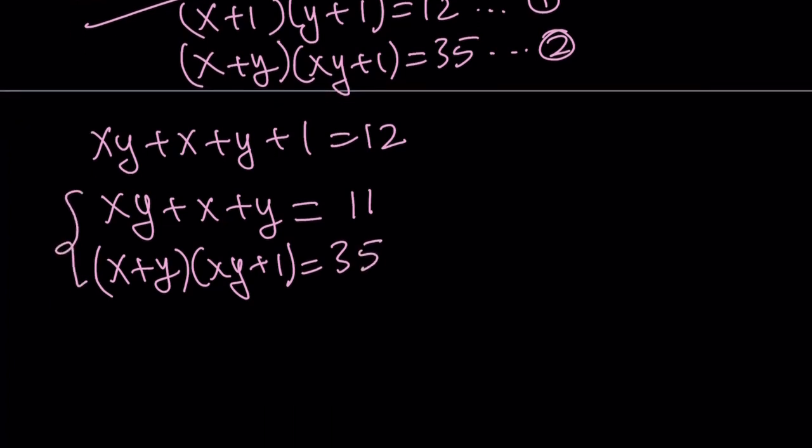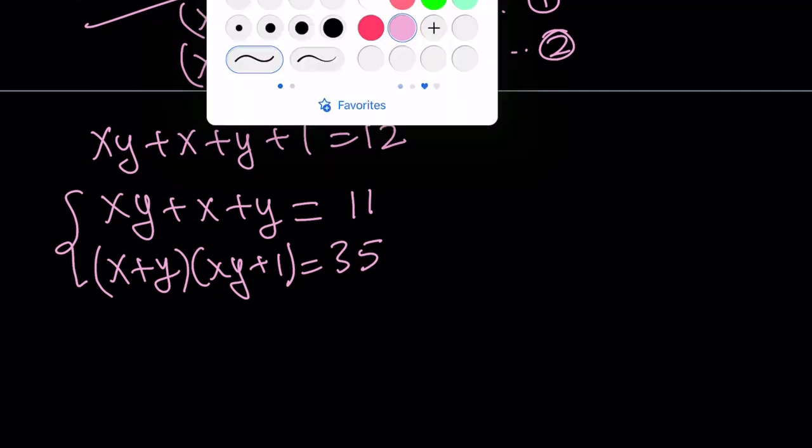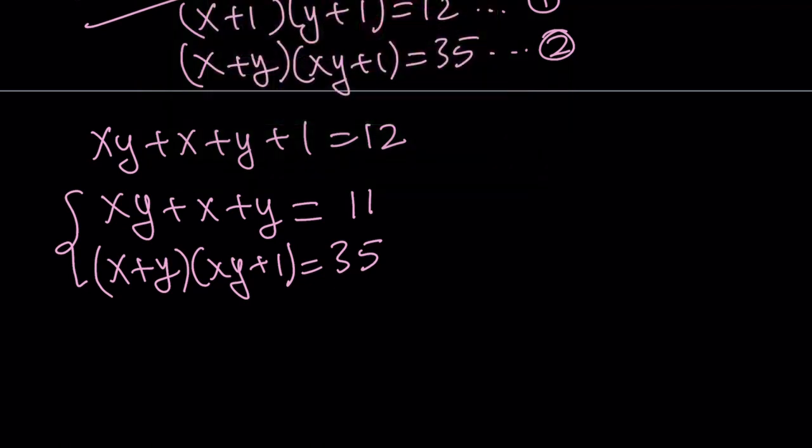It is a system in two variables. And those variables are xy and x plus y. Because if I do that, then the solution will be simpler. So let's go ahead and do the following. I'm going to call xy, p, which is product.